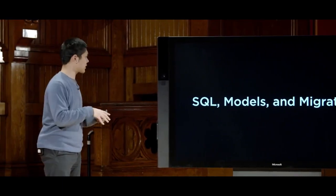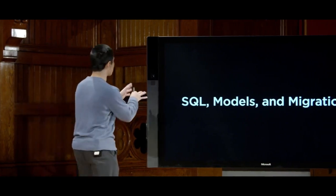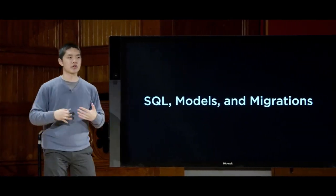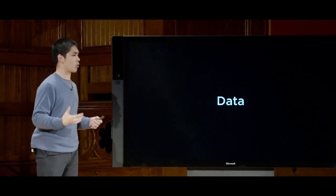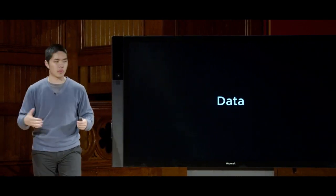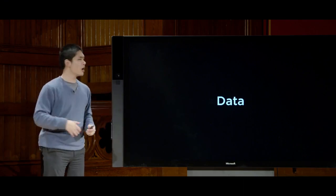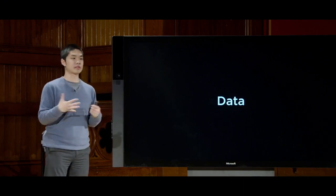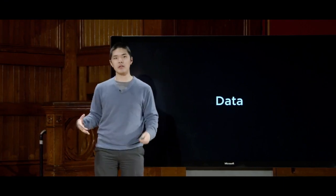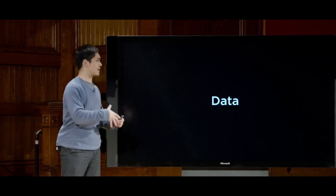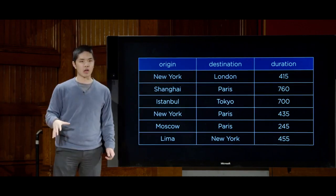Before we get into things that are more Django-specific, let's begin with a discussion of SQL more generally, and more broadly, a discussion of data and the types of data we're going to want to store. There are a number of ways to store data inside of a computer system, but in databases — in particular, a type of database known as a relational database — we're going to store data inside of a table, where each table has rows and columns.